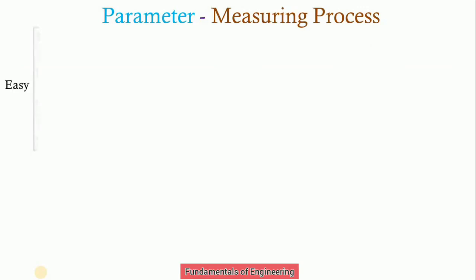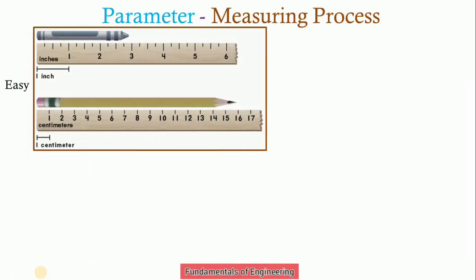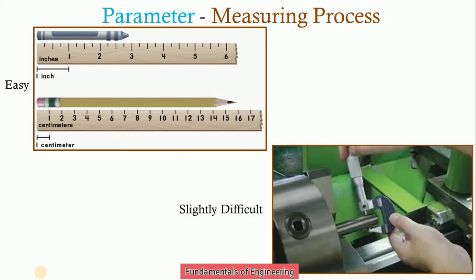Measuring process. Line standard is very easy to measure any dimension of an object. But end standard is difficult because we have to align the end faces of the instrument. If we are getting the correct end faces which match exactly, then we can get the reading. So it is slightly a difficult process.